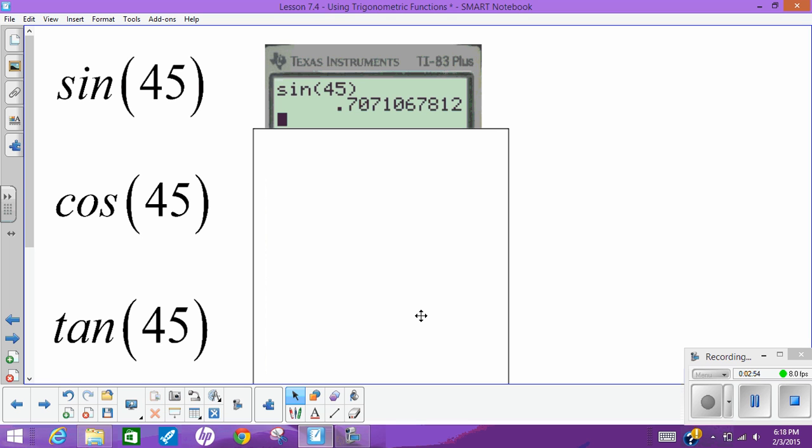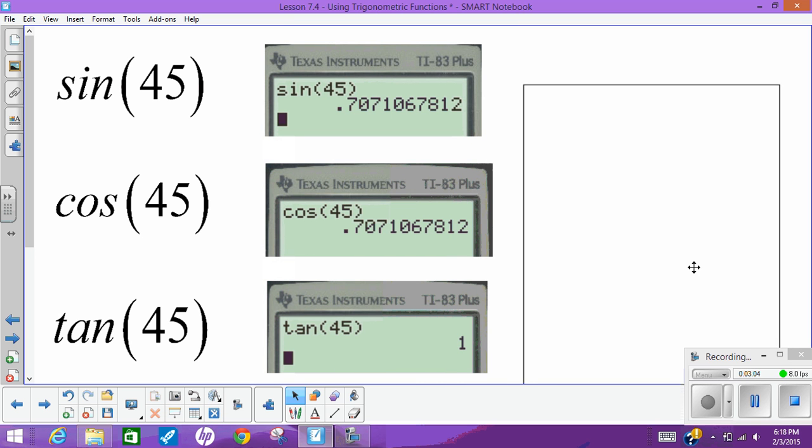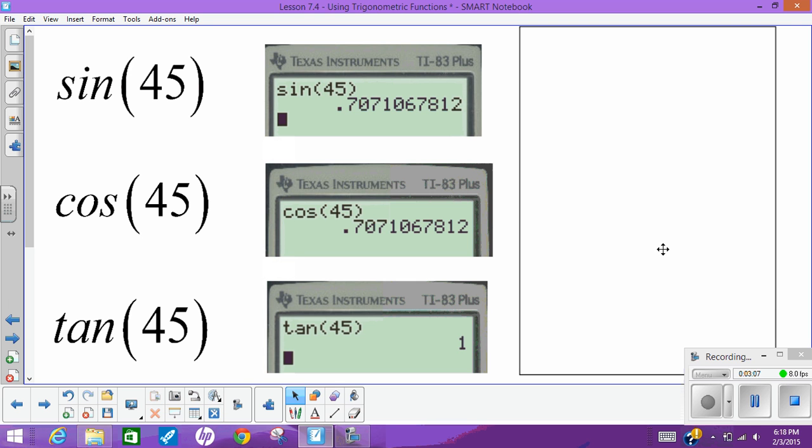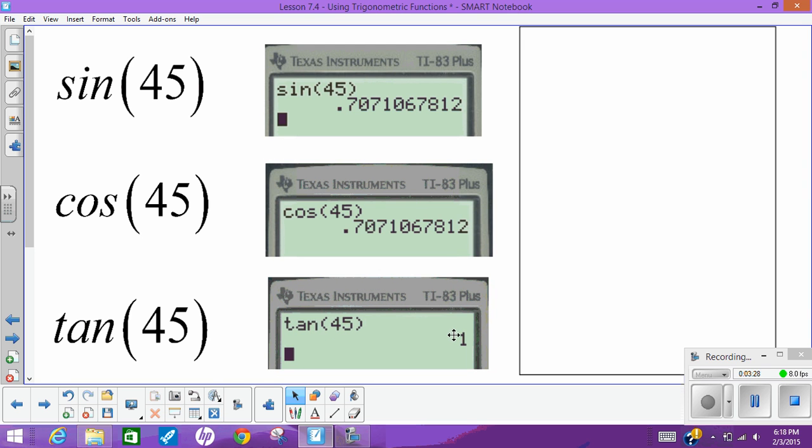So we plug in just like we did with the angle of 30 - you just hit sine, plug in 45, and you get 0.7071067812. We can do the same things for cosine and tangent, and notice tangent is nice and neat - the tangent of 45 is 1. That should make sense since if I have a 45 degree angle in a right triangle, we're talking about an isosceles right triangle and the two legs should have the same length, so their ratio opposite over adjacent will be the same.